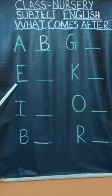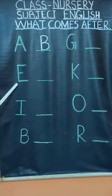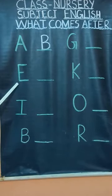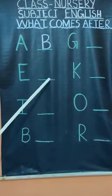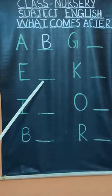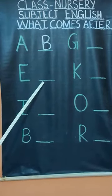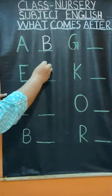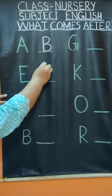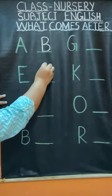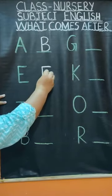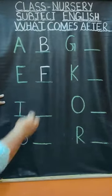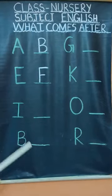Very good. Now tell me, what is this? E for Elephant. Very good. Now tell me, what comes after E? Yes — F for Fish. So you will write letter F for Fish on the blank space.